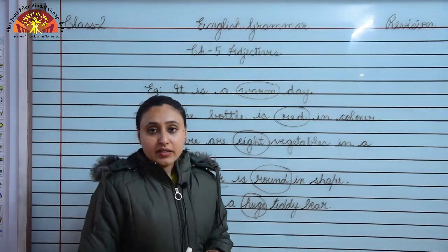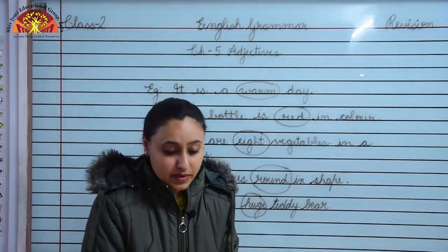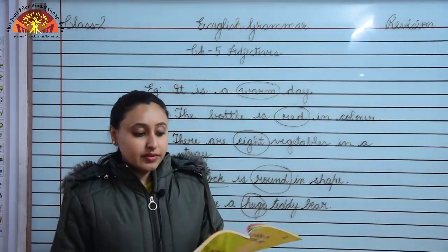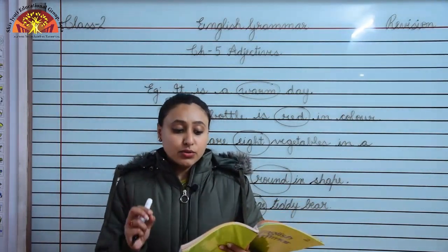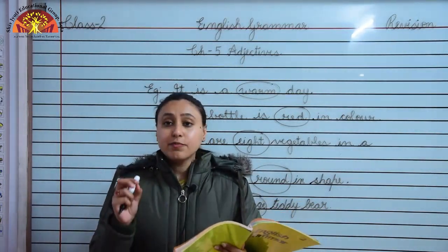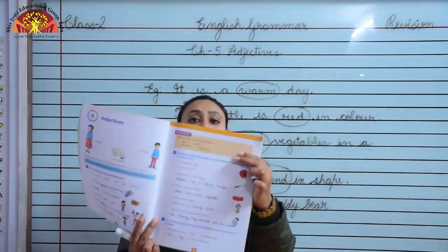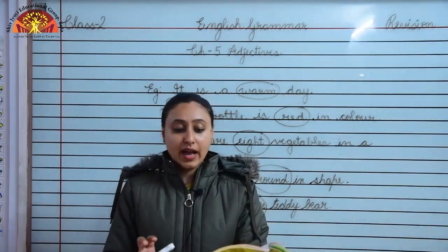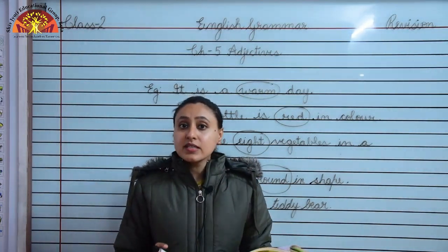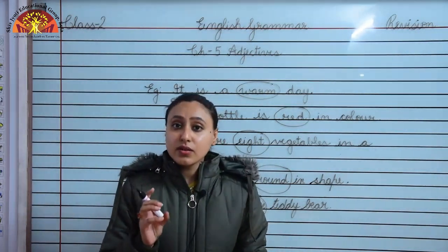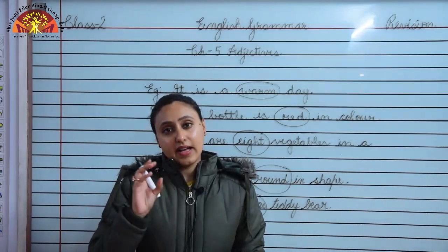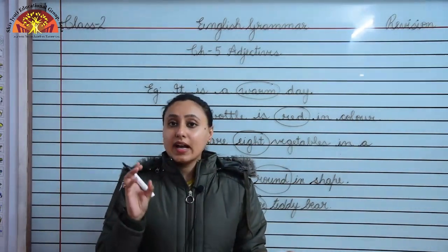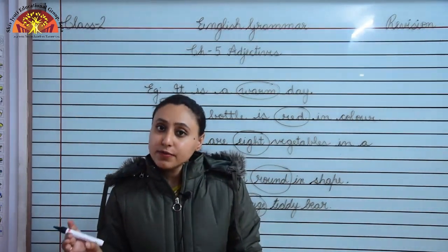Now I would like you to tell one more thing. Take out page number 21. Adjectives do not have plural forms. This means you cannot write 'tall' as 'talls', 'big' as 'bigs', 'beautiful' as 'beautifuls'.